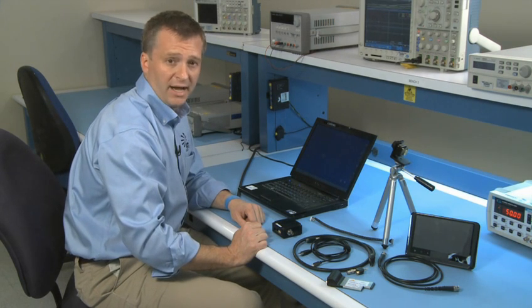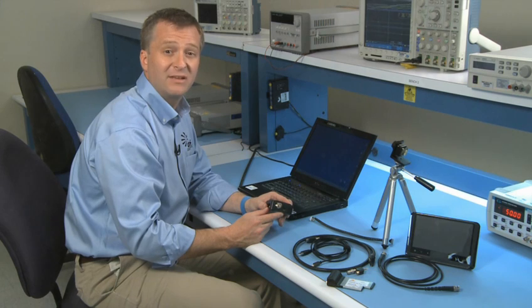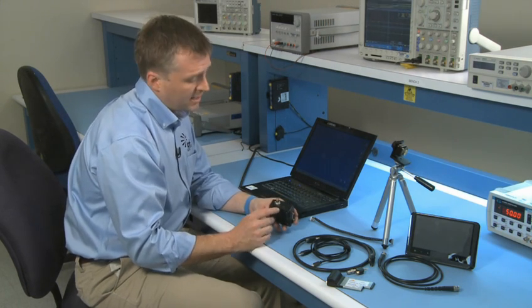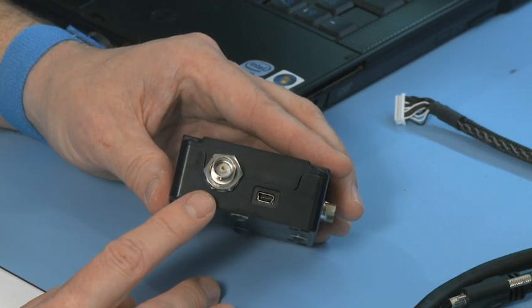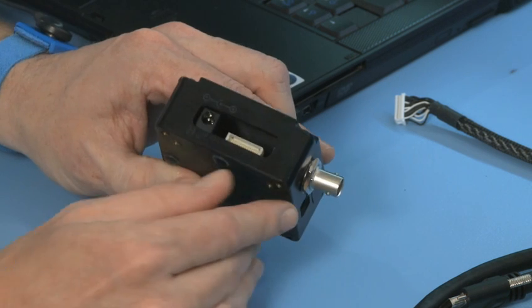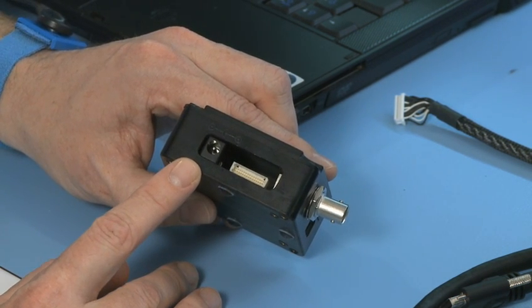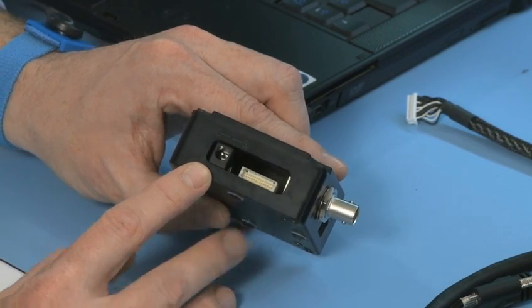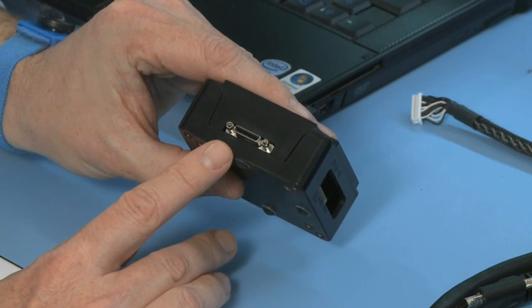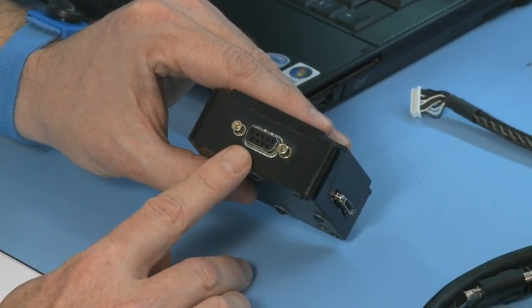Next we'll connect the breakout box. This is the interface between the camera, the analog display, and the computer. On the breakout box you'll see a mini USB connector, a BNC connector, a 30 pin electrical interface, a power jack to power the camera if RS-232 is used to control the camera, a digital video camera link connector, and finally an RS-232 connector.